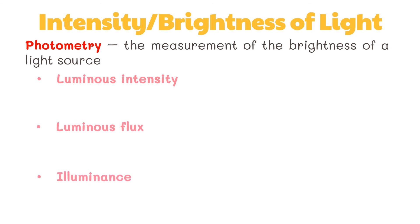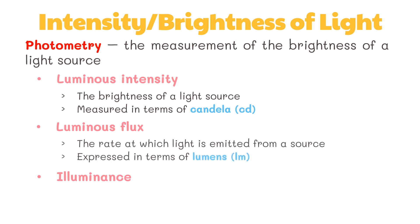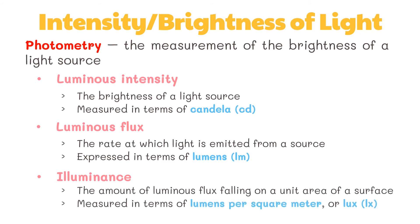Luminous intensity refers to the brightness of a light source and is measured in terms of candela. Luminous flux is the rate at which light is emitted from a source and strikes the surface of a whole sphere. It is expressed in terms of lumens. Illuminance is the amount of luminous flux falling on a unit area of a surface, measured in terms of lumens per square meter, or lux.